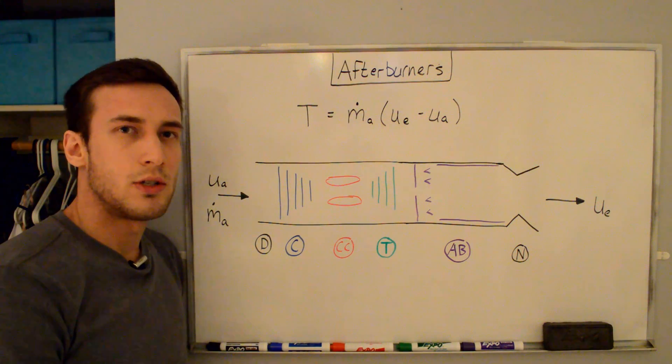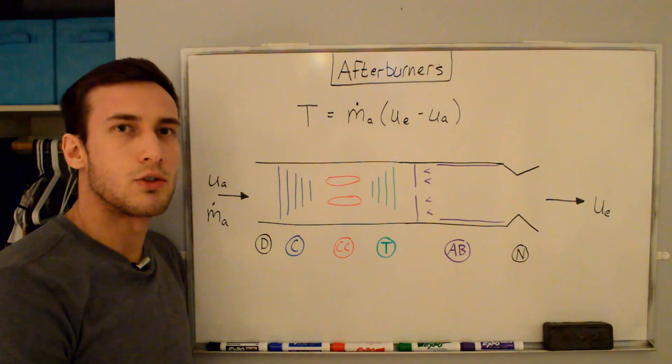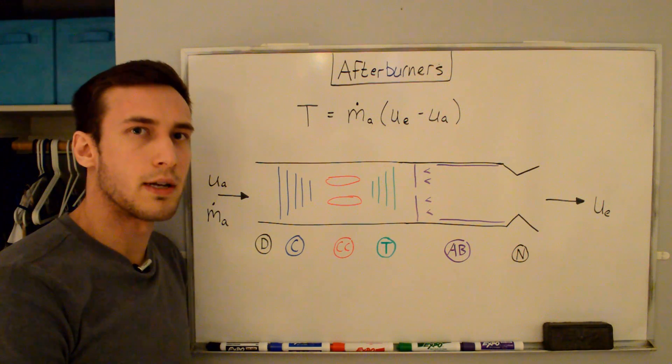Afterburners are used mainly in military engines and sometimes non-military applications to increase thrust during takeoff, during acceleration, and for supersonic flight.